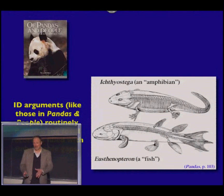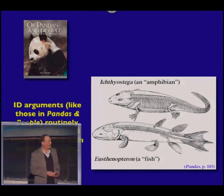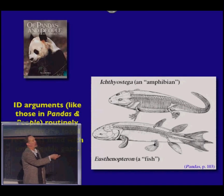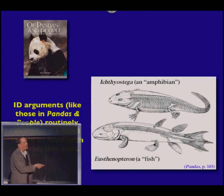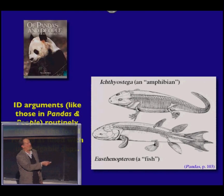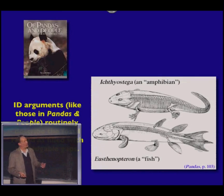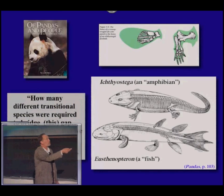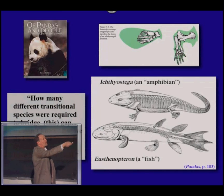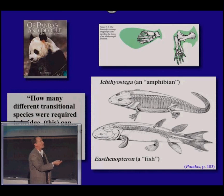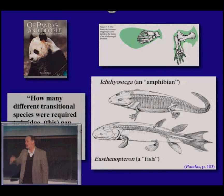In the Dover trial, we didn't want to argue from quotations — we wanted to show data. Kevin Padian, one of our expert witnesses from Berkeley, brought this into the trial. This is the intelligent design textbook Pandas and People, and it shows a lobe-finned fish from the Devonian period called Eusthenopteron alongside Ichthyostega, one of the very first amphibians. They put them side by side and described the fossil record as filled with unbridgeable gaps — as if evolutionary biologists actually believe this simply changed into that. The book asks how many transitional species were required to bridge this gap, and claims no such transitional species have ever been recovered.